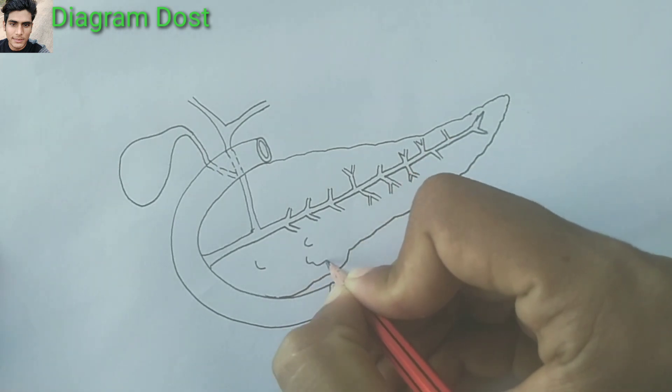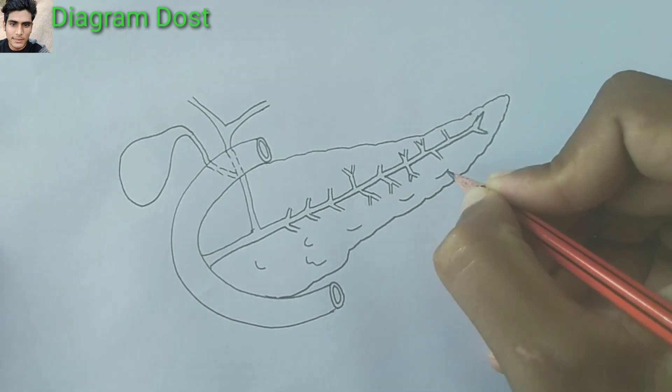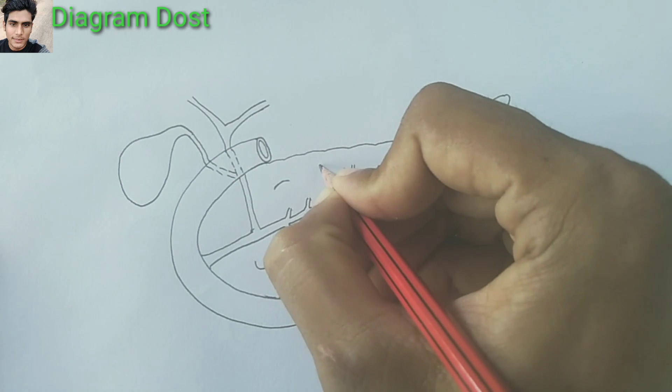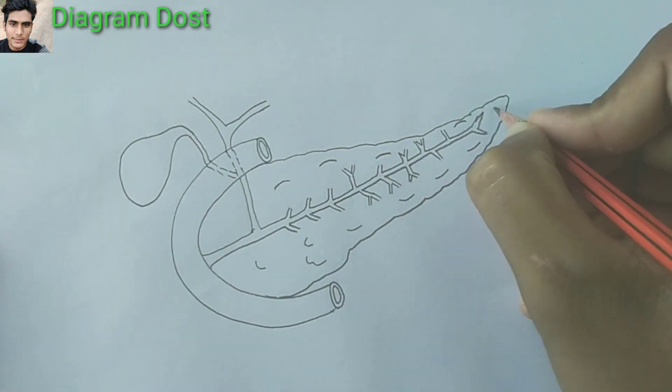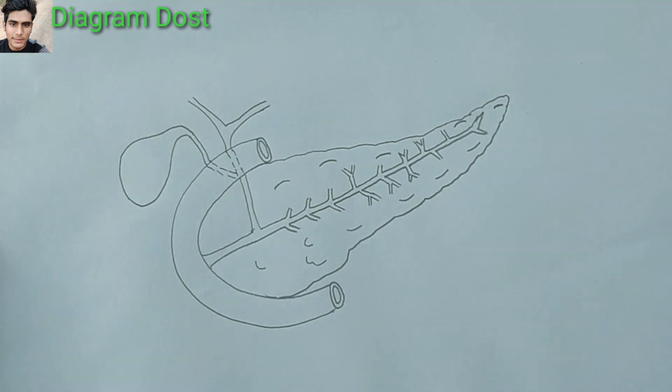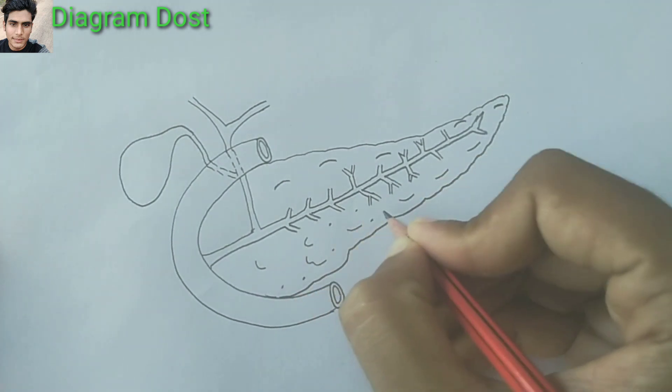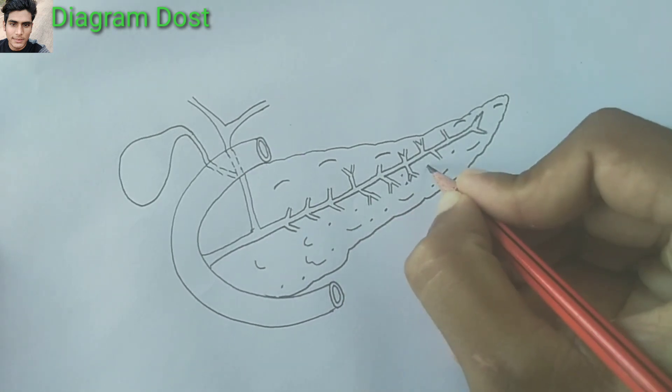Now make irregular folds. These are the folds of pancreas. Make small dots if you want—it's not necessary.